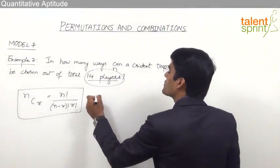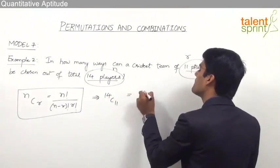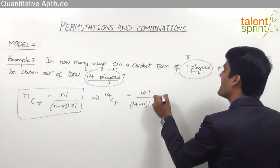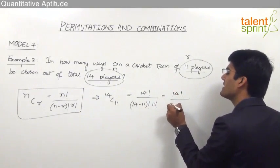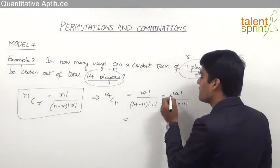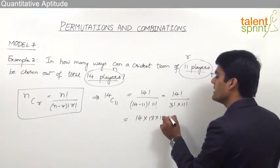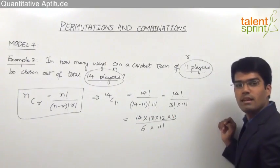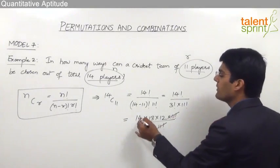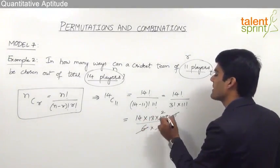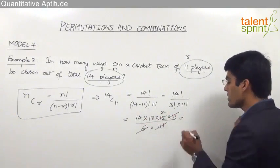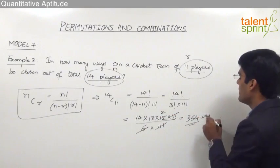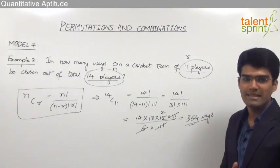The answer is 14C11 = 14 factorial divided by (14 minus 11) factorial into 11 factorial, which is 14 factorial by 3 factorial into 11 factorial. Expanding: 14 into 13 into 12 into 11 factorial, divided by 6 into 11 factorial. The 11 factorials cancel, leaving 14 into 13 into 12 divided by 6. Cancelling 6 gives 14 into 13 into 2, which equals 364. So there are 364 different ways to form a cricket team of 11 players out of 14 players.